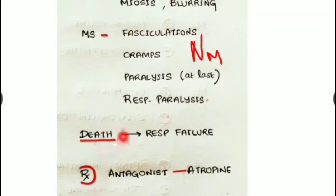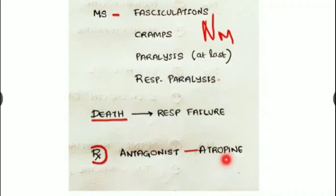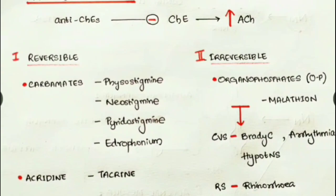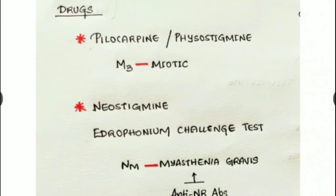The antagonist and treatment for organophosphate poisoning is atropine. Physostigmine and pilocarpine act on M3 receptors and cause miosis — constriction of the pupil. As a result, physostigmine and pilocarpine are used as miotic drugs.